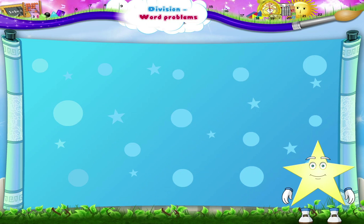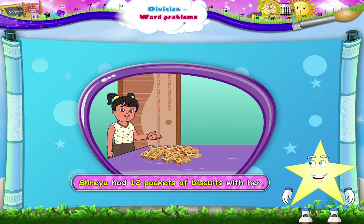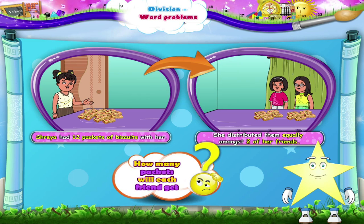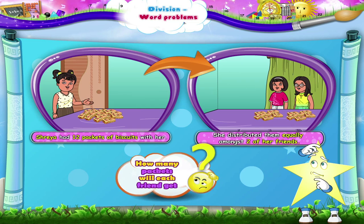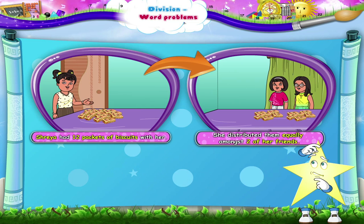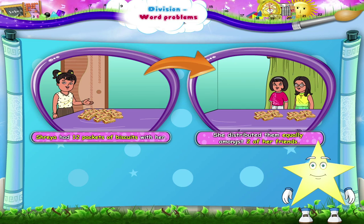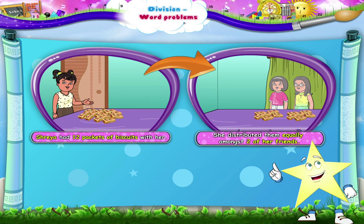Let's read the next word problem. Shriya had 12 packets of biscuits with her. She distributed them equally amongst 2 of her friends. How many packets will each friend get? What is given here Starry? It is given that Shriya had 12 packets of biscuits. Amongst how many friends did she distribute it? Yes, amongst 2 friends.